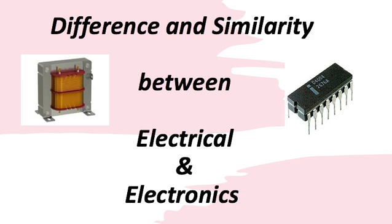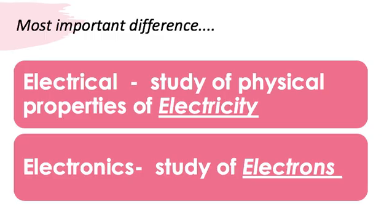Before we get into the details, let's see the most important difference between electrical and electronics. As you can see on the slide, electrical is nothing but a study of electricity. On the other hand, electronics is the study of electrons — not protons, neither neutrons, only the study of electrons. This is the most important point to remember: electrical is a study of electricity whereas electronics is related to electrons.